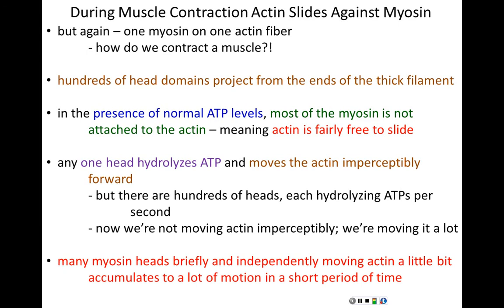However, once any of those myosin head groups hydrolyzes ATP, it's going to first bind to that actin and then pull, moving the actin filament imperceptibly towards the center of the sarcomere. But that's one myosin. Imagine hundreds of head groups doing that, each hydrolyzing thousands of ATPs per second. Each of those myosin heads is moving an actin filament imperceptibly, but the sum of hundreds of heads adds up to quite a bit of movement. Instead of a crew analogy, we have to think more of a mosh pit.